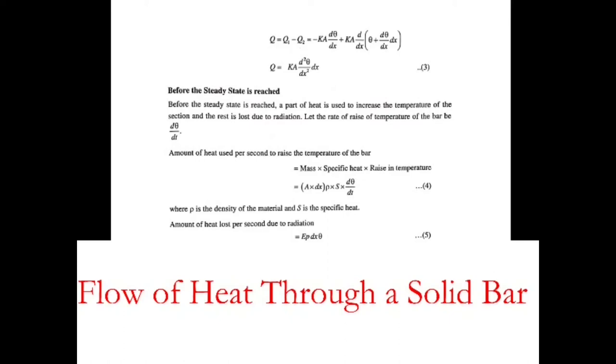The heat gained per second by the solid bar between planes P1 and P2 is Q equals Q1 minus Q2. Substituting Q1 and Q2, we get minus K A d theta by dx, and minus into minus becomes plus K A d by dx of theta plus d theta by dx into dx. Expanding the second term and cancelling minus K A d theta by dx with plus K A d theta by dx, we are left with K A d squared theta by dx squared. This is the amount of heat flowing through the bar per second.